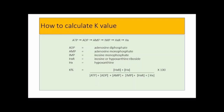To calculate K-value: the change from ATP to ADP to AMP, IMP, inosine, and hypoxanthine is calculated as: (hypoxanthine + inosine + hypoxanthine) divided by (ATP + ADP + AMP + IMP + inosine + hypoxanthine), multiplied by 100.